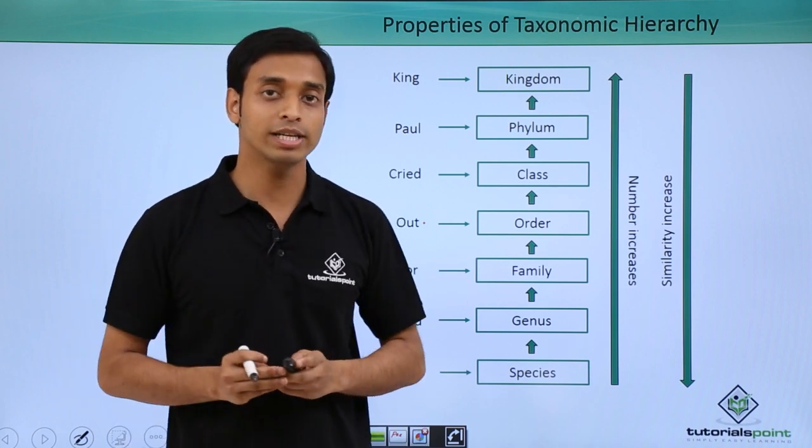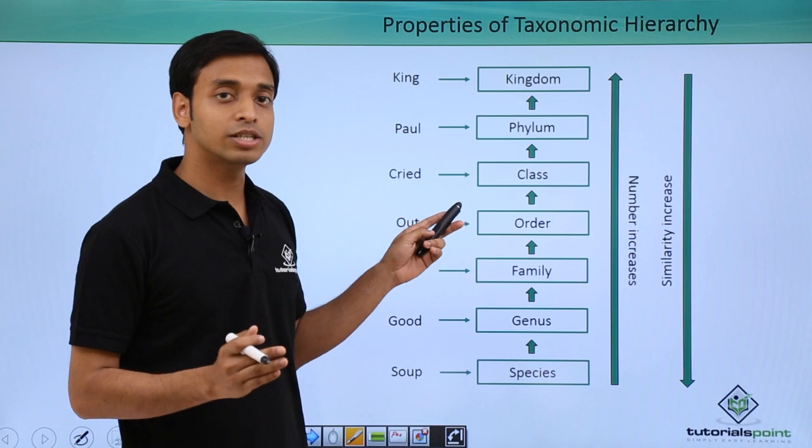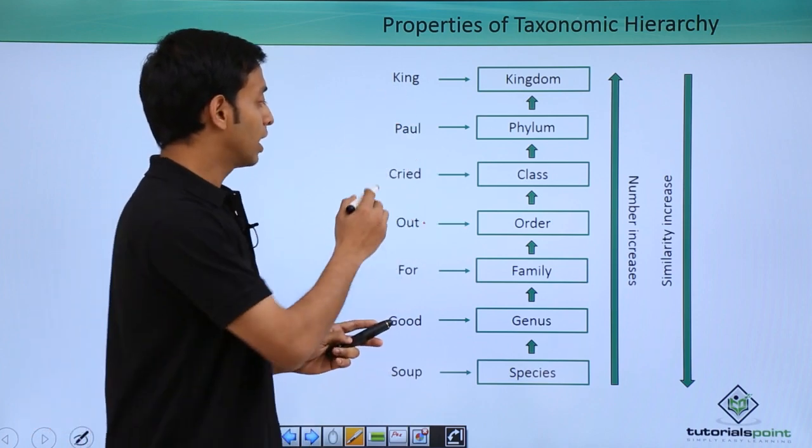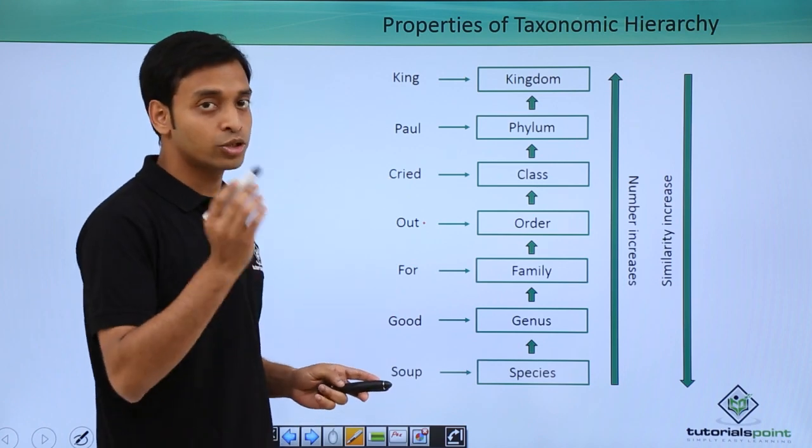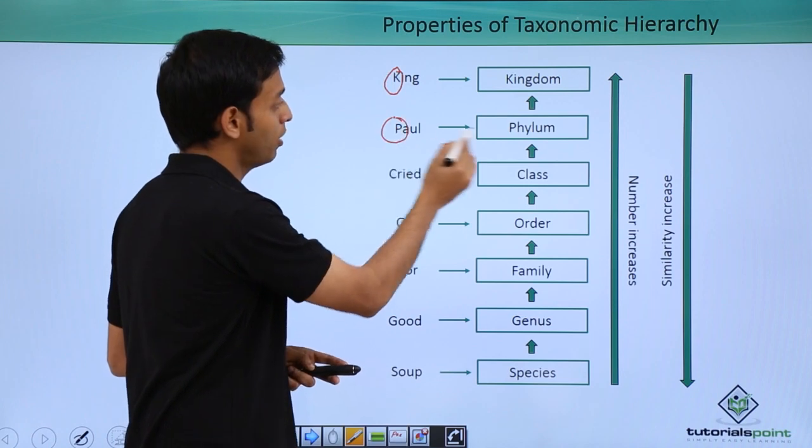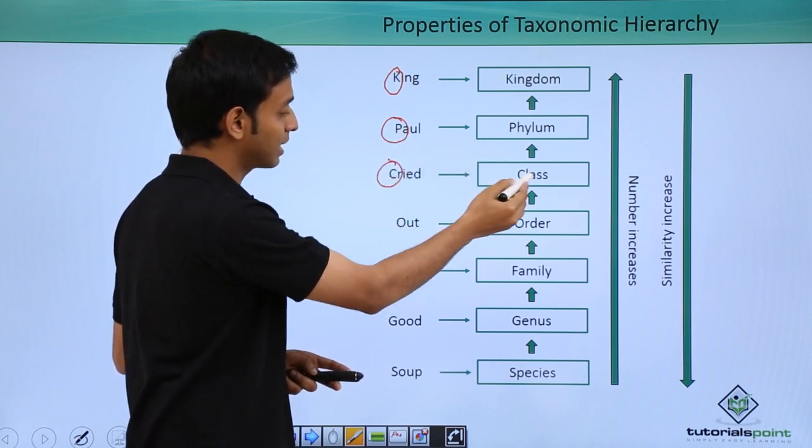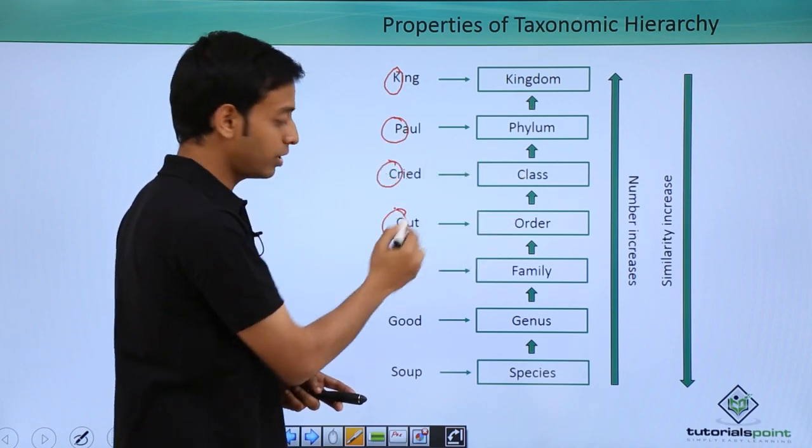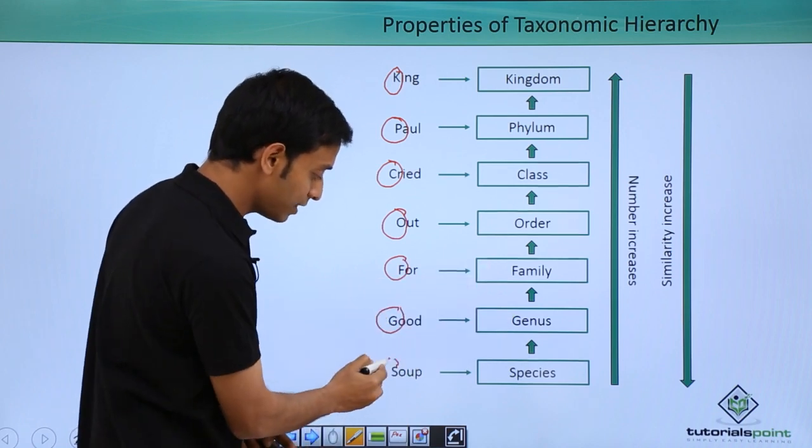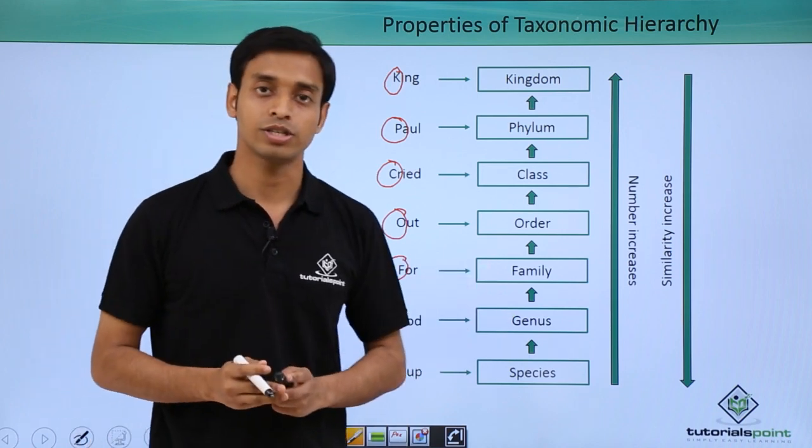To remember this, we can use a very good sentence: King Paul cried out for good soup. Let's see the similarity: King, that is Kingdom; Paul, Phylum; Cried, that is Class; Out, Order; For, which is Family; G, this comes for Genus; and then Soup, it comes from Species.